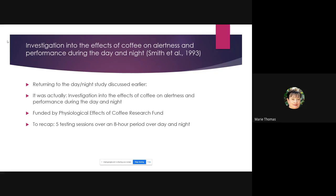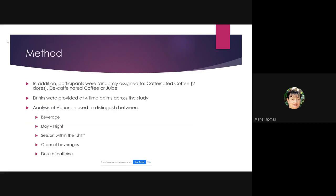That first study was actually an investigation into the effects of coffee on alertness and performance during the day and night, funded by the Psychological Effects of Coffee Research Fund. We were trying to see if we could reverse impairments in performance over the day and night using caffeine. Participants were randomly assigned to either caffeinated coffee — at two doses, equivalent to one cup or two cups — decaffeinated coffee, or juice. Drinks were provided at four time points. We used analysis of variance to distinguish between beverage type, day versus night, position within the session, and caffeine dose.